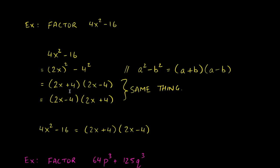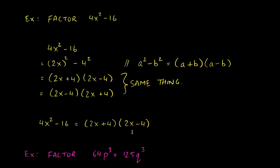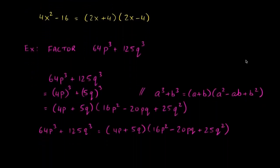Note that (2x + 4)(2x − 4) is the same as (2x − 4)(2x + 4) because the order of multiplication is irrelevant — just like 2 × 3 = 3 × 2 = 6. This is analogous to factoring 18 into 3 and 6.